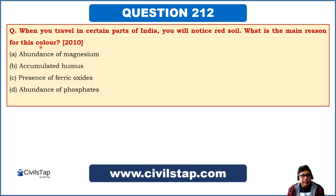The next question: when you travel in certain parts of India you notice red soil — what is the main reason for this colour? The options are abundance of magnesium, accumulated humus, presence of ferric oxide, or abundance of phosphates. The correct answer is option C — presence of ferric oxide. If there is an abundance of humus, the soil is dark; phosphates and magnesium do not render any particular colour. Ferric oxide gives the soil a reddish tinge.